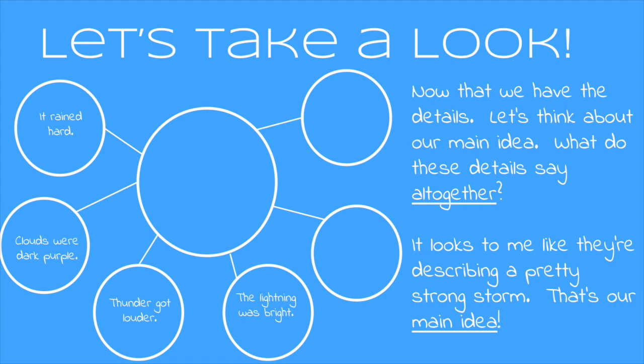How can we put that into a sentence that includes all of these details? How about, the storm was very strong? That includes the fact that it rained hard, that the clouds were dark purple, that the thunder got louder, and that the lightning was bright.